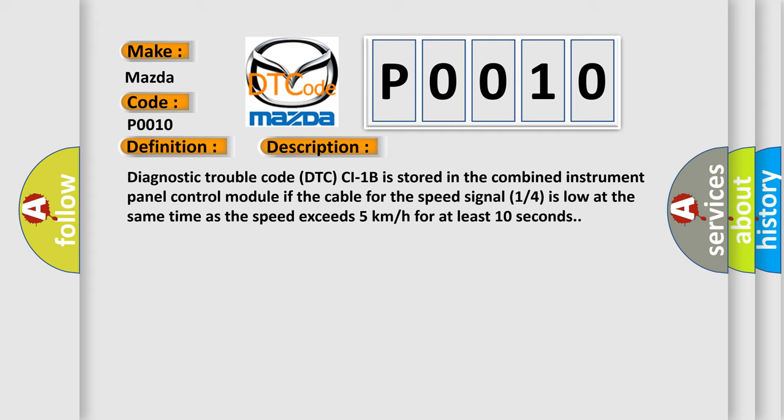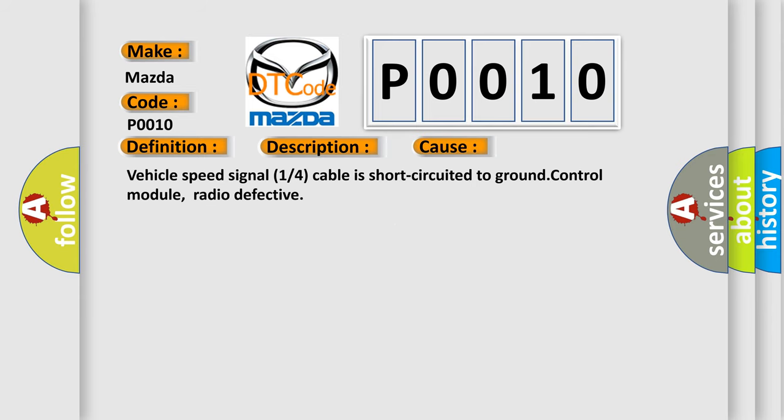This diagnostic error occurs most often in these cases: Vehicle speed signal 1 or 4 cable is short-circuited to ground control module, or radio defective.